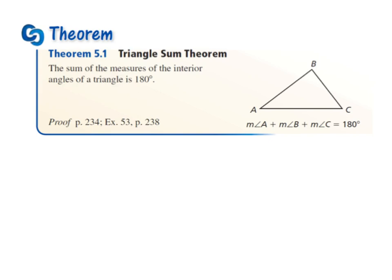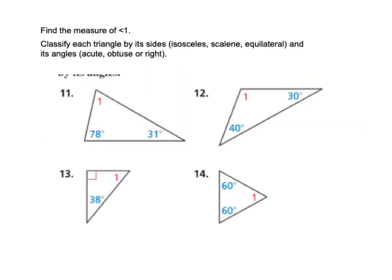Something else that I hope is somewhat of a review for you is the fact that if you have a triangle, all angles in triangles always add up to exactly 180 degrees. So if you added angle A plus angle B plus angle C, it is always going to be 180 degrees. Let's practice using the triangle sum and then classify them by their sides and angles.